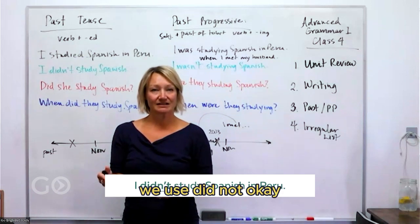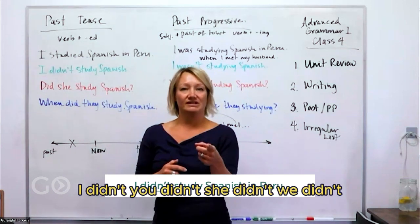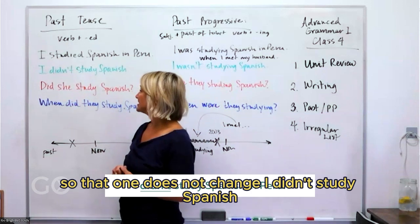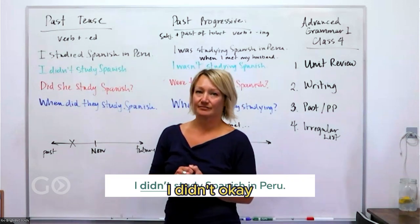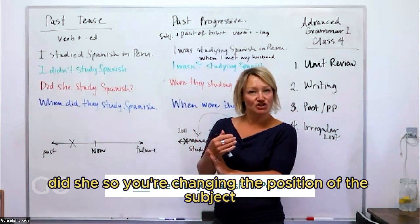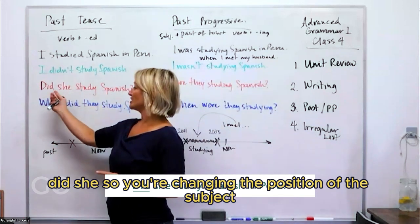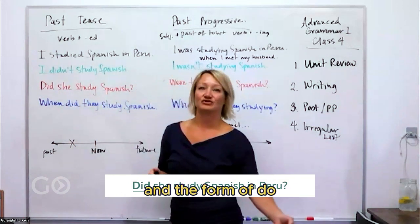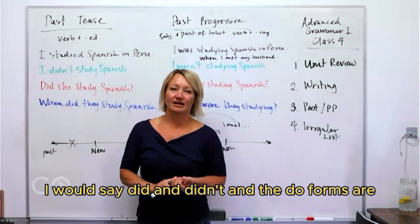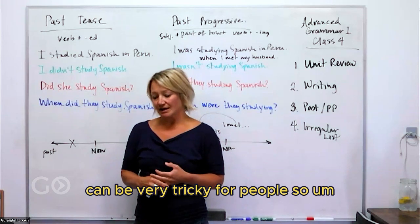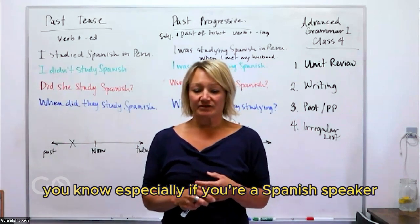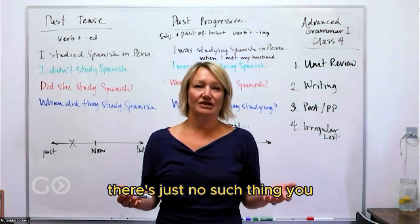To make the simple past negative, use 'did not': 'I didn't study Spanish.' The main verb stays in base form — it doesn't change. The question form uses 'did': 'Did she study Spanish?' The 'do' auxiliary — 'did' and 'didn't' in the past — can be very tricky, so really spend time practicing it.